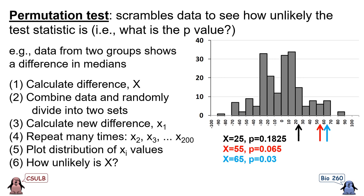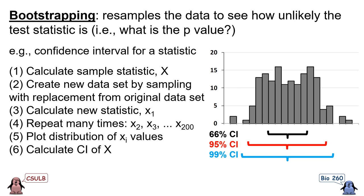Lastly, we come to bootstrapping. In bootstrapping, we resample our original dataset again and again to determine how unlikely the test statistic we obtained was — in other words, what the p-value is. One example of a use for bootstrapping is to construct confidence intervals around observed sample statistics.